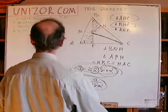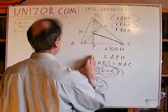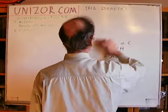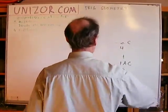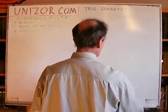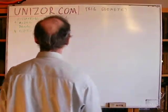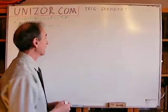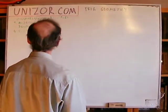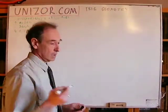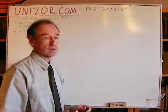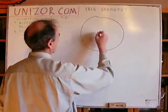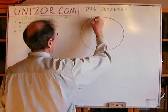That's it. And the last problem I would like to present in this introductory lecture about trigonometry applied to geometric properties of triangles is: how to express the area of a triangle in terms of the radius of the circumscribed circle and angles.